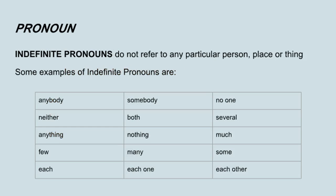Indefinite pronouns do not refer to any particular person, place, or thing. Some examples of indefinite pronouns are: anybody, somebody, no one, neither, both, several, anything, nothing, much, few, many, some, each, each one, each other.